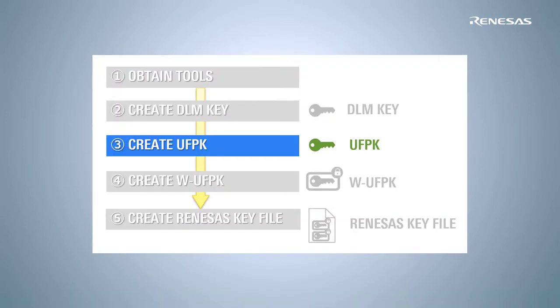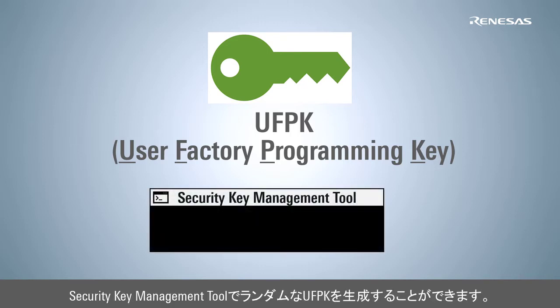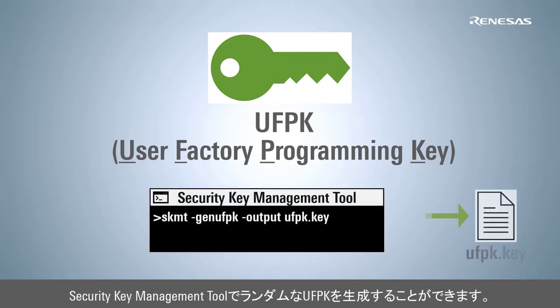To install the DLM key, we must create a User Factory Programming Key (UFPK). The UFPK is a temporary key used to encrypt the DLM key. This key should also be managed securely. In this example, we use the Security Key Management tool to generate a random UFPK and key file.